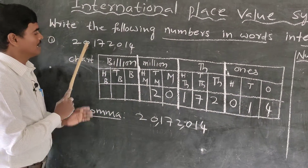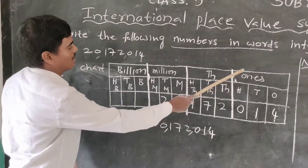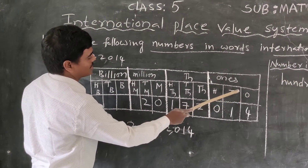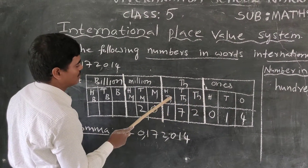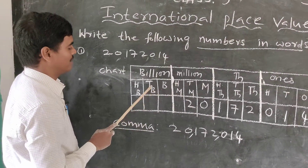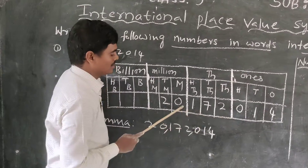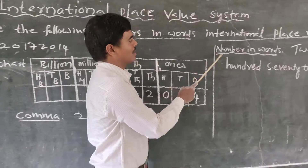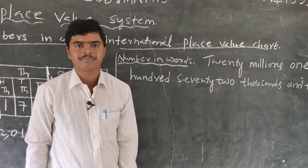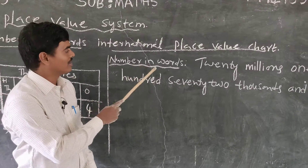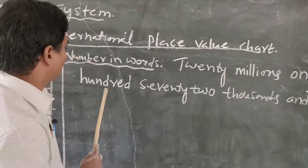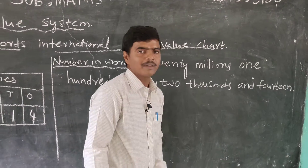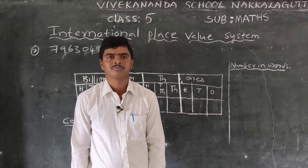The millions period gives us twenty millions, completed. Next, the thousands period gives us 172 thousand. And 14 for the ones period. So the number in words is: twenty millions, one hundred seventy-two thousand, and fourteen. Once again: draw the chart, write the numbers, place the commas, then write the number in words.